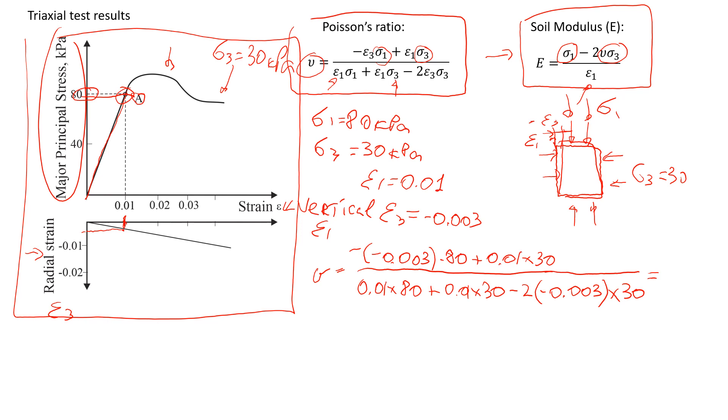According to my calculations, it should be 0.42. Remember that the maximum Poisson's ratio is 0.5. If you get something more than 0.5, it means you made a mistake. You have to check your calculations.